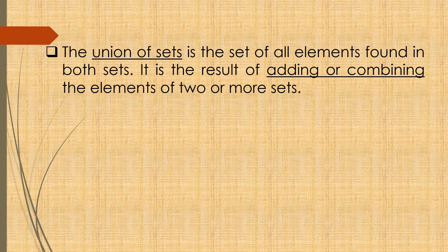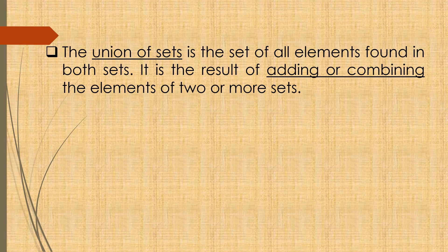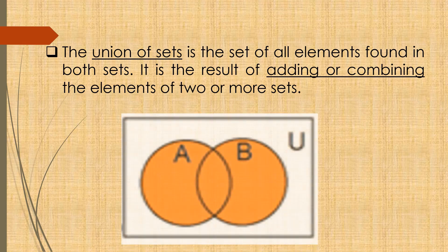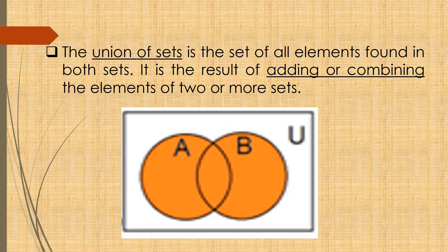So ano nga ba ang the union of sets? The union of sets is the set of all elements found in both sets. It is the result of adding or combining the elements of two or more sets, like this one. We have two sets, set A and B. Ang color orange na ito ang nagre-represent ng union of sets. So pinagsama natin lahat ng elements o lahat ng part ng A at B, since we are talking about the union of sets.